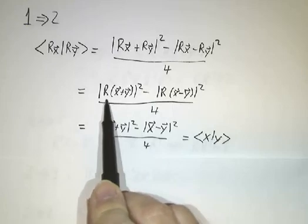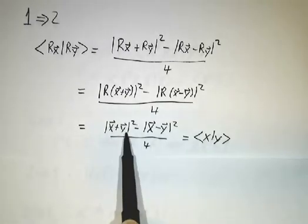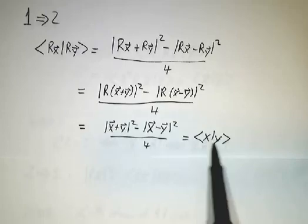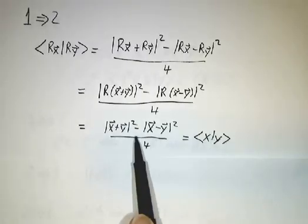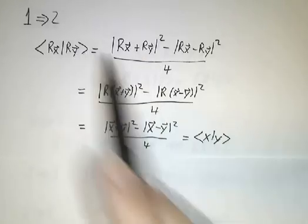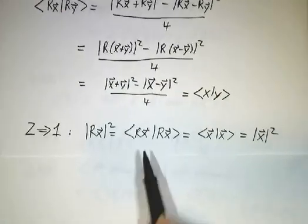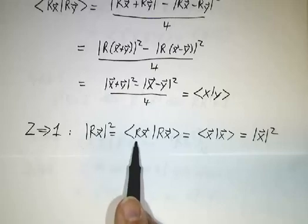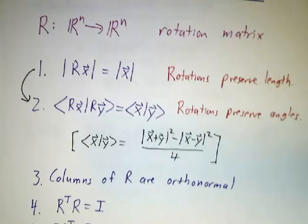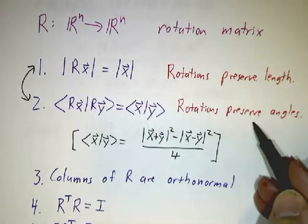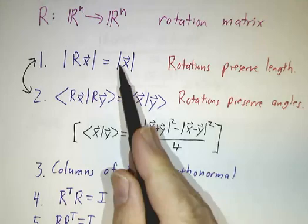So if R preserves lengths, then the length of Rx plus Ry is the length of x plus y, and you get the same calculation, so the inner product of Rx with Ry equals the inner product of x with y. The same polarization identity that related inner products to lengths for Rx and Ry also relates inner products and lengths for x and y. Likewise, if something preserves inner products, then the length of Rx squared is the inner product of Rx with itself, whereas the inner product of x with itself is the length of x squared. So rotations preserve length, angles, and inner products, and preserving inner products implies preserving length, and vice versa.